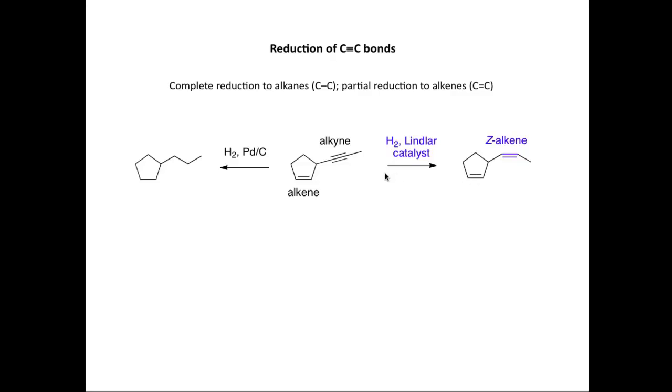And interestingly, we can convert the alkyne stereoselectively into a Z-alkene. If we want to convert the alkyne into an E-alkene, we need to use a different reducing agent. And in this case, we would use sodium and liquid ammonia. The sodium and liquid ammonia selectively reacts with the C-C triple bond to form an E-alkene. Notice that the C-C double bond in the starting material here is retained in the product.